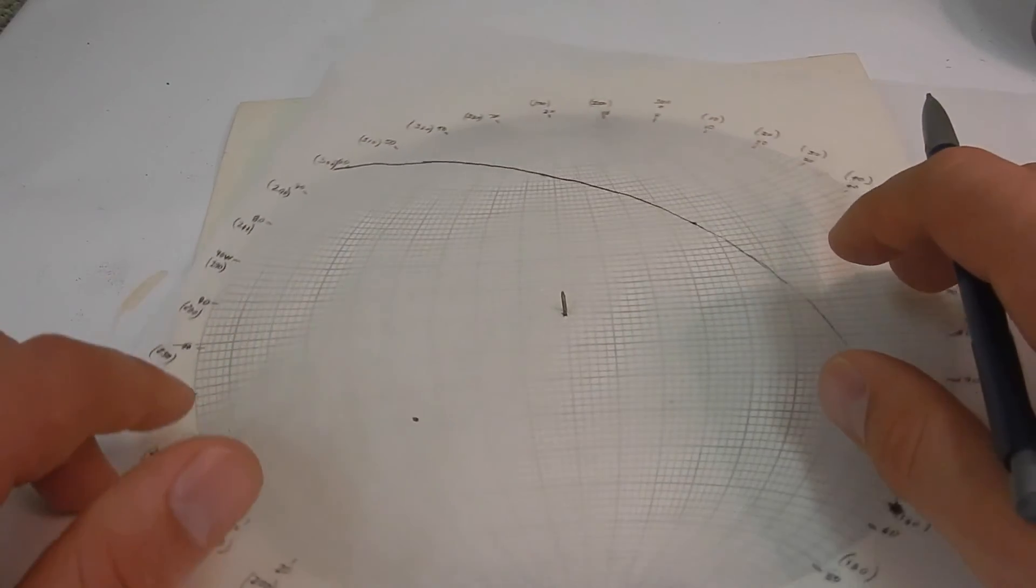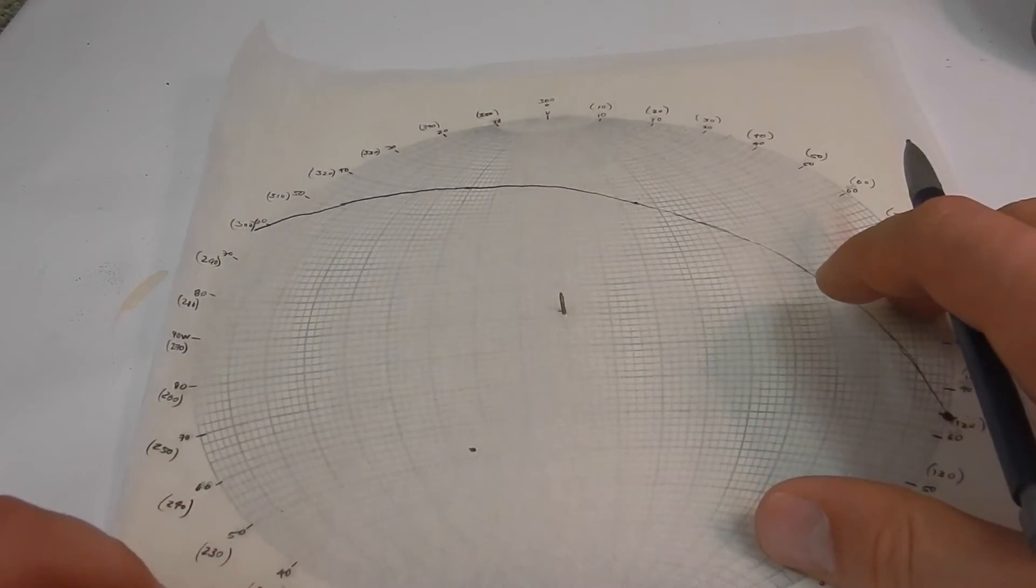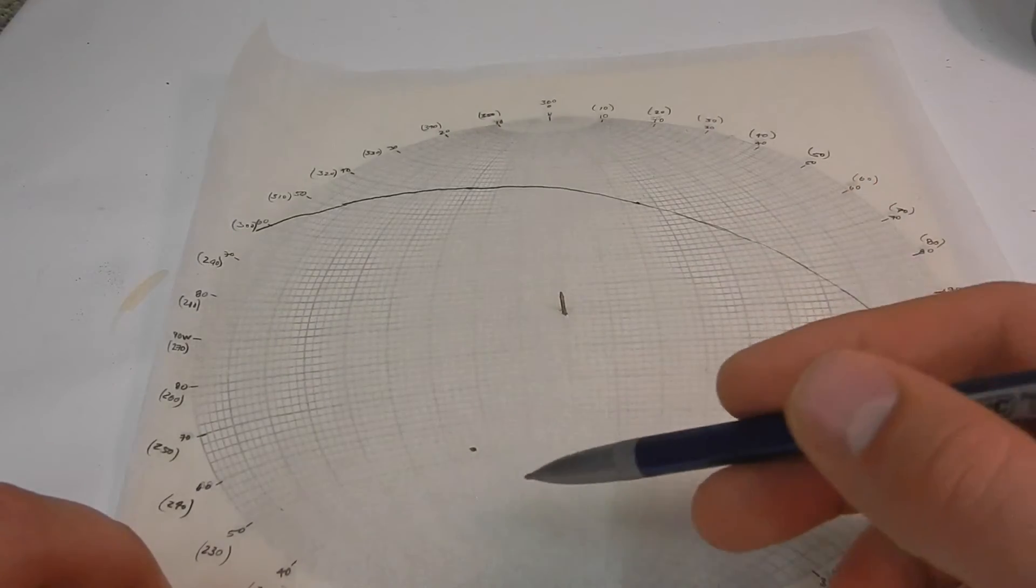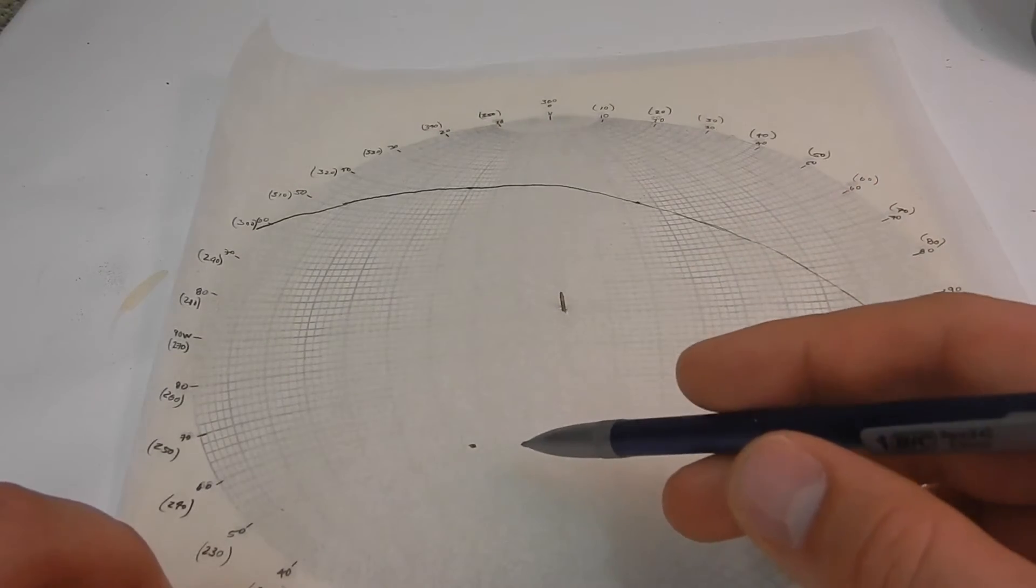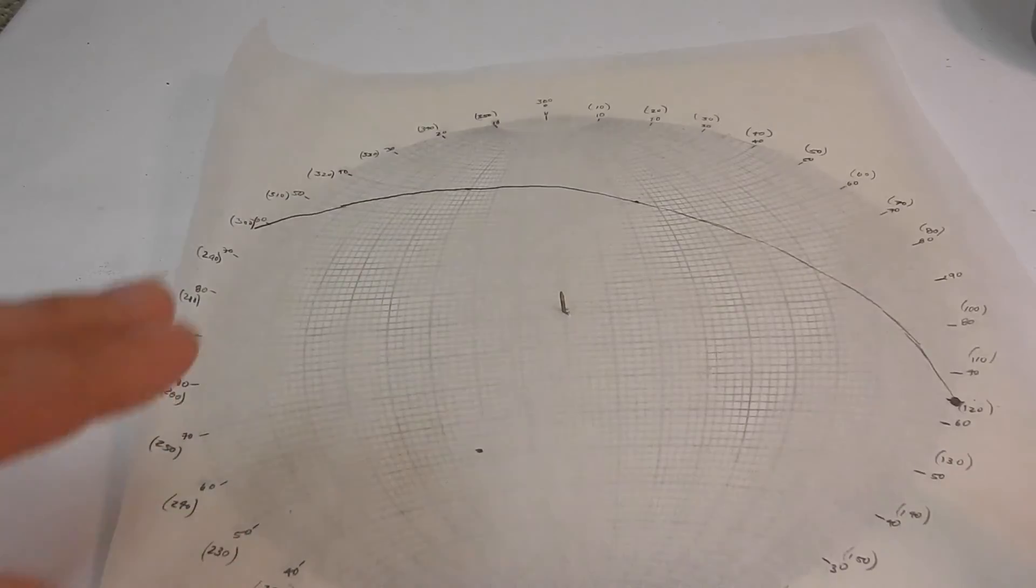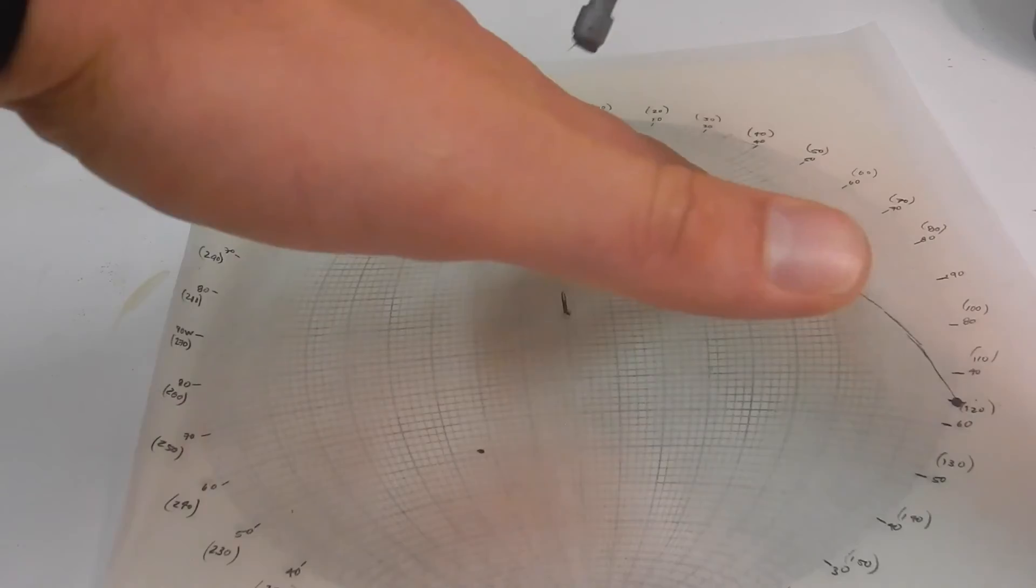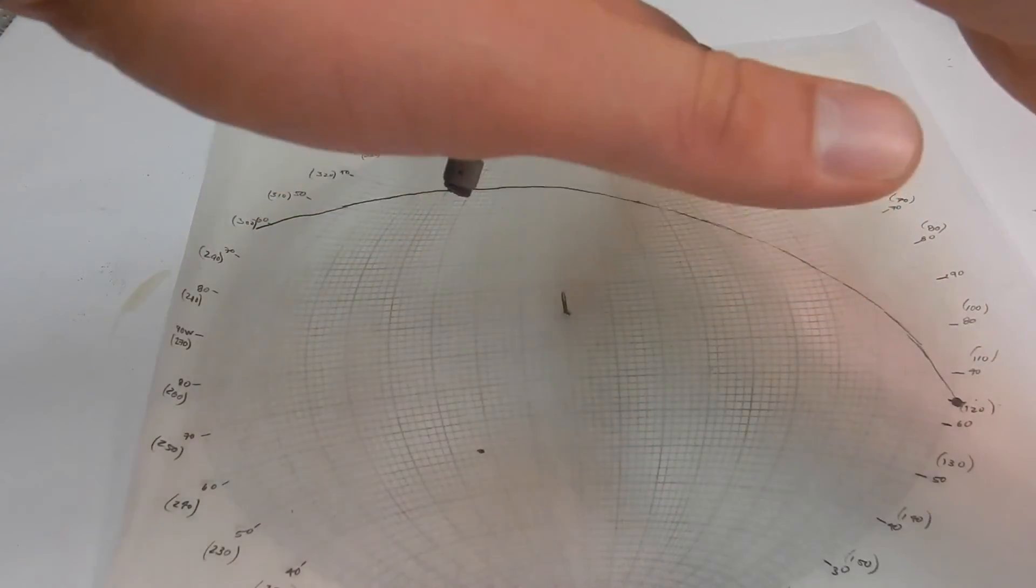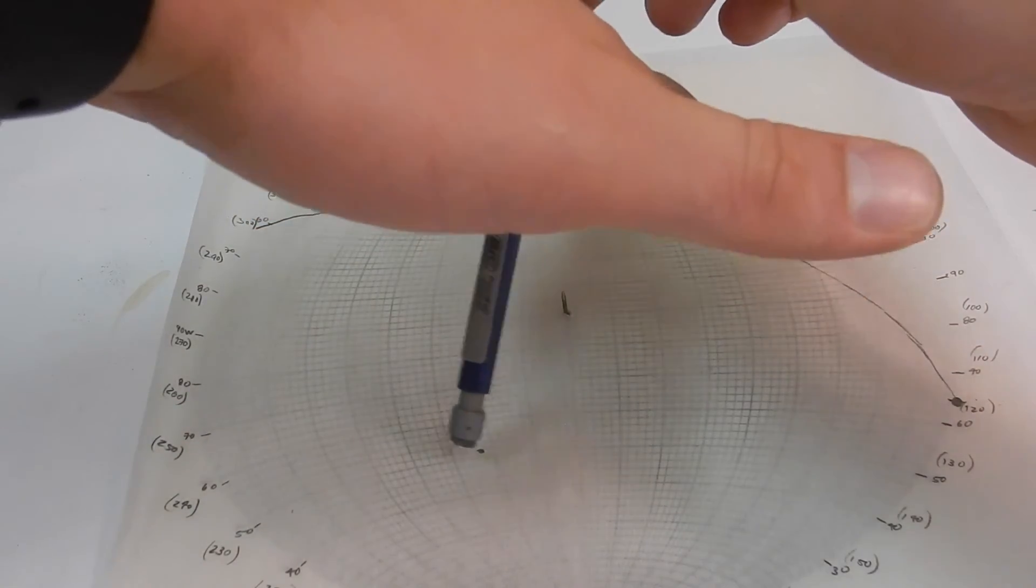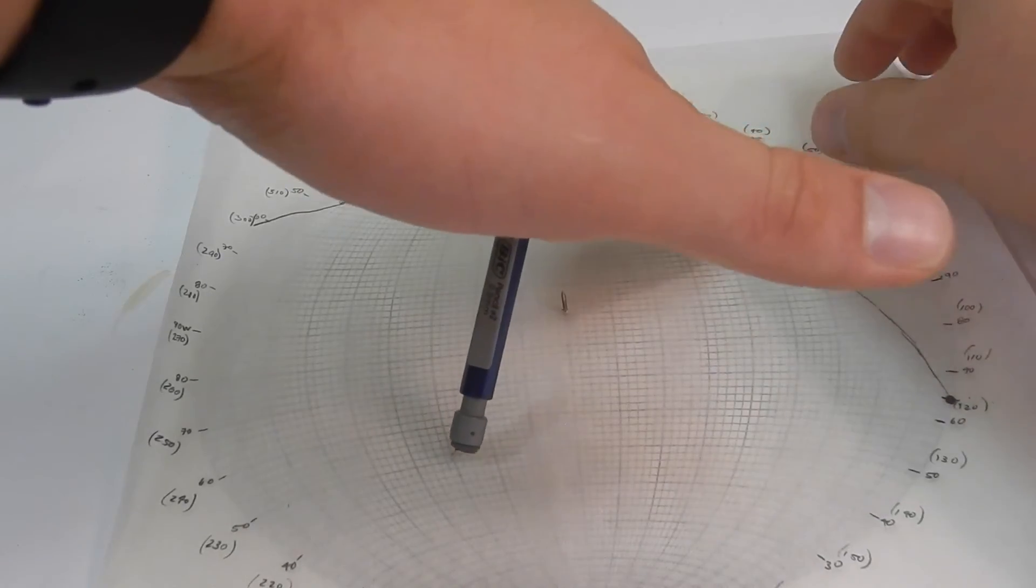Now if we rotate our stereonet back to north, we can see that our pole is plotted over here. Remember when I made our plane with my hand? It's dipping like that. If the plane is dipping like that and I stick a line in 3D space into it, it should hit that pole.